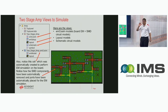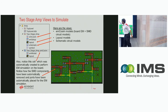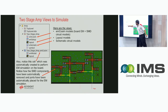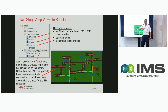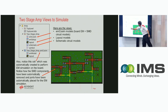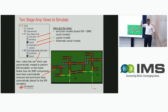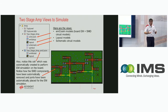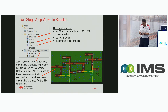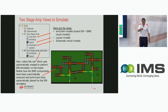Once I click 'generate view,' I come back to my main window and notice the EM co-simulation view has been automatically created. A new cell — a two-stage amplifier EM co-sim cell — has also been automatically created; I did not create it myself. If you open the layout of that cell, you'll see that all the components have been automatically removed and ports have been placed automatically. This is really what saves you a lot of time.